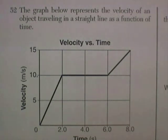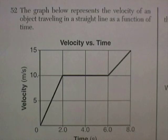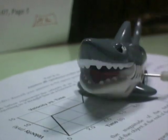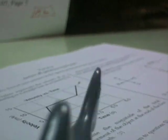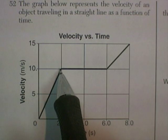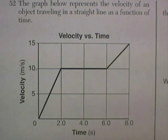Question 52. The graph below represents the velocity of an object traveling in a straight line as a function of time. So it starts off at zero velocity, gets up to 10 meters per second, it does that for a while, and then it gets up to about 15 meters per second.